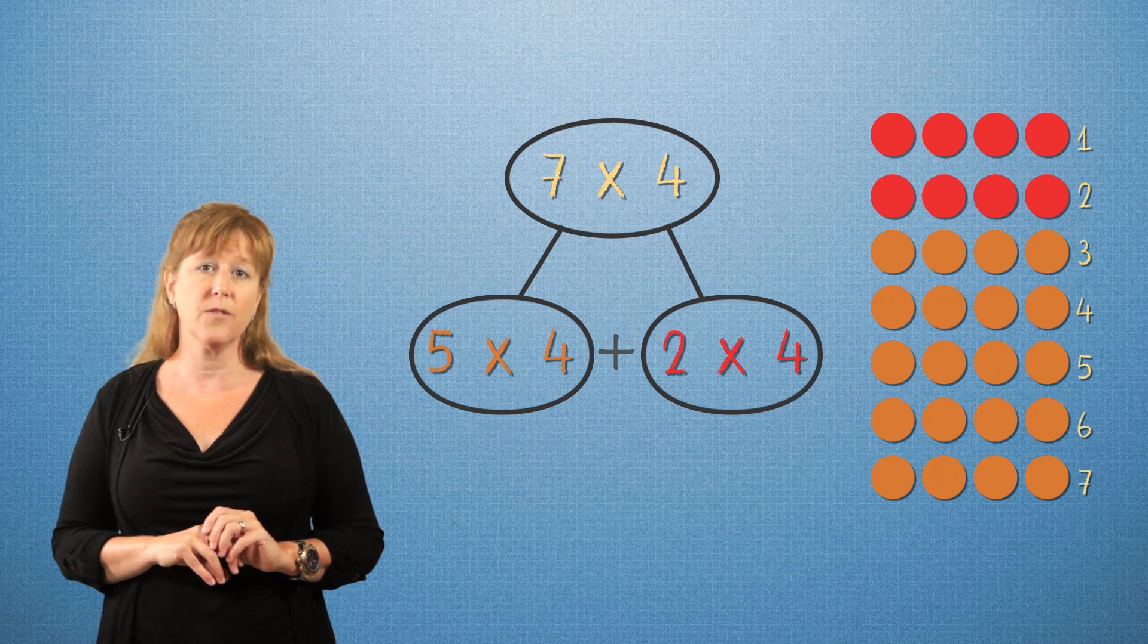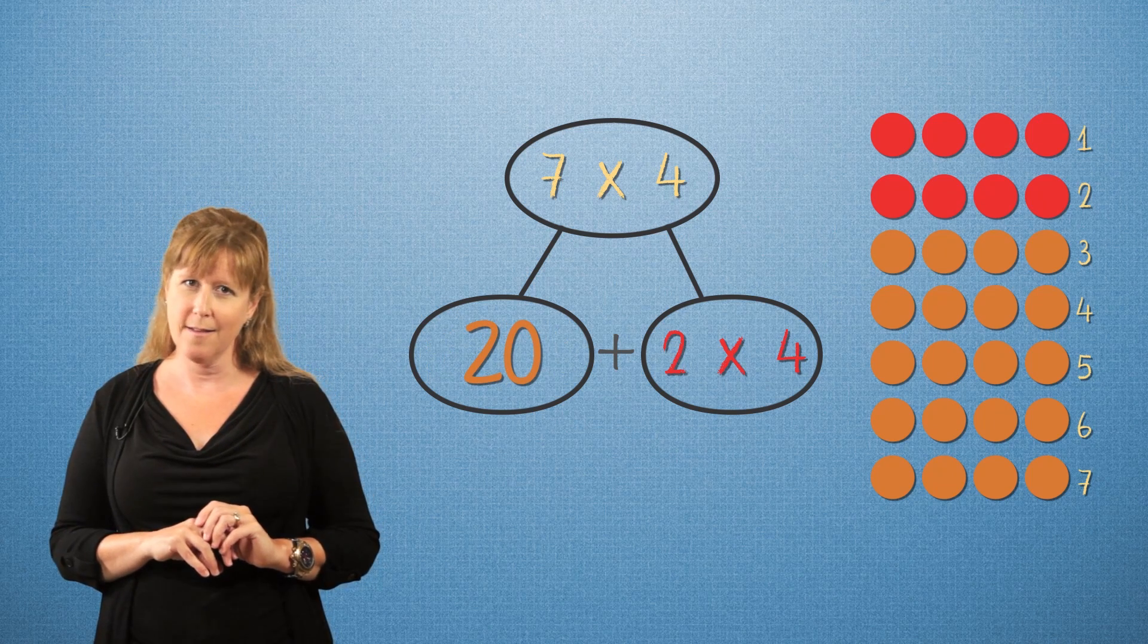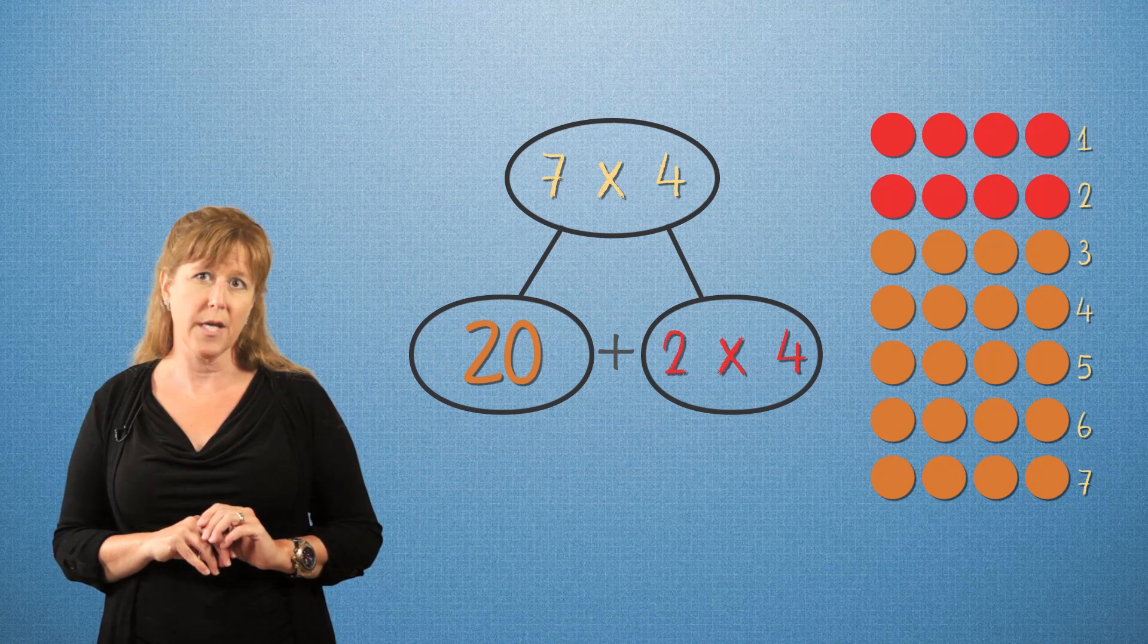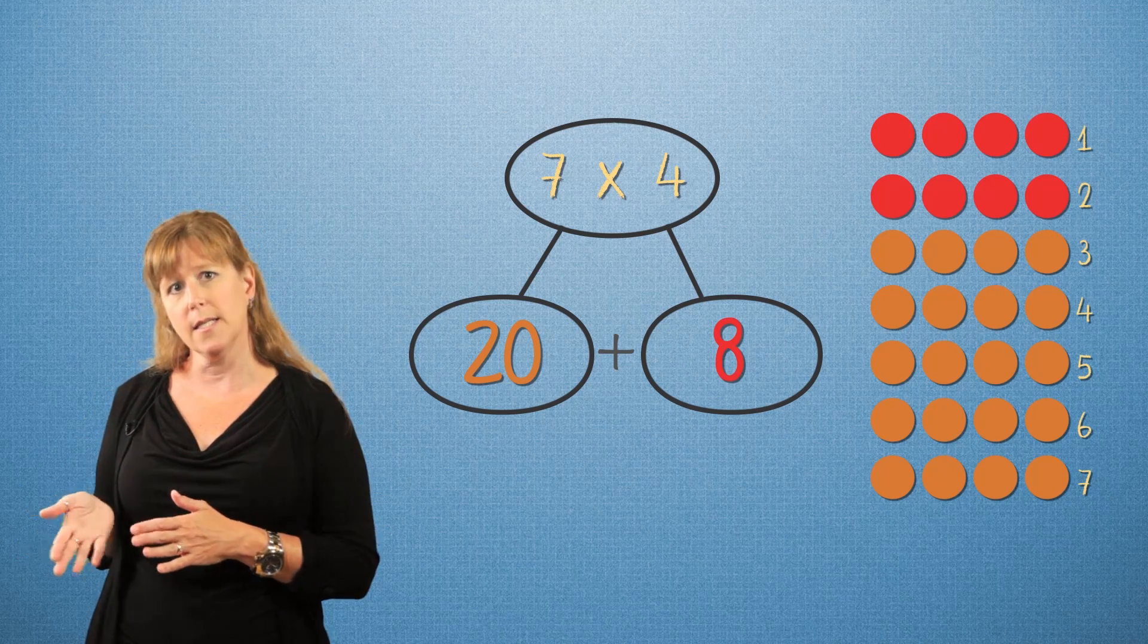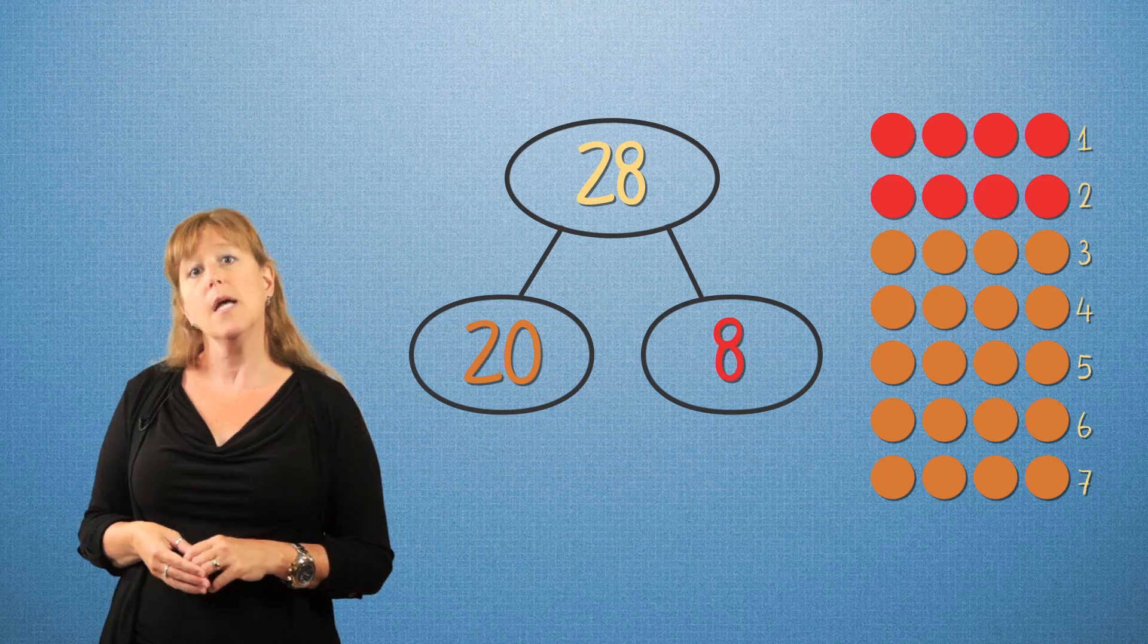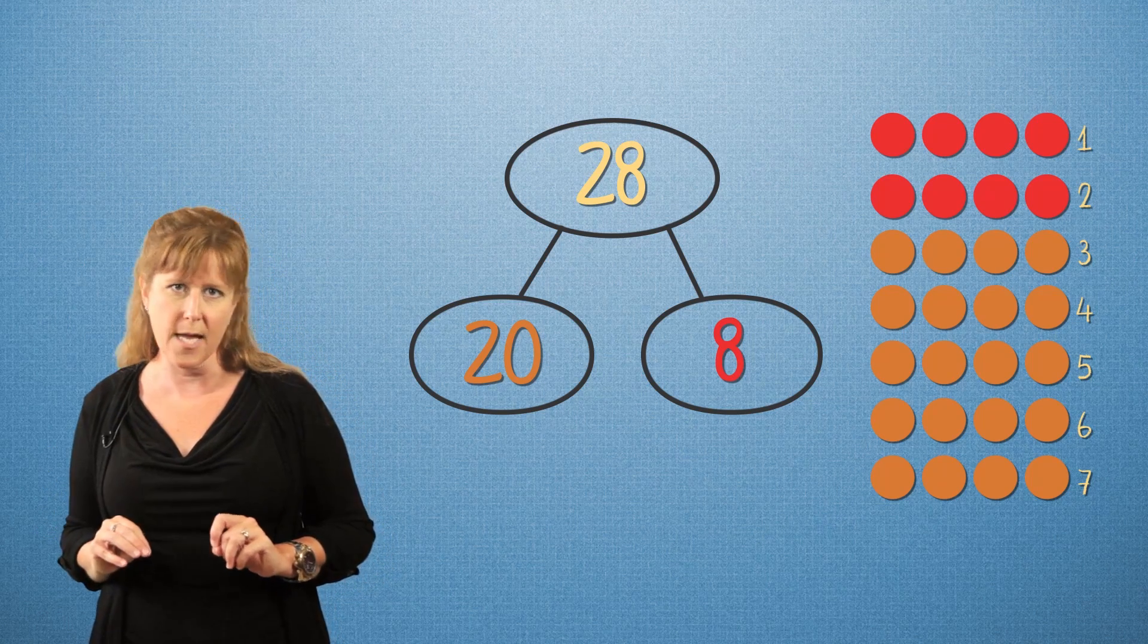Five times four equals twenty. And two times four equals eight. Then twenty plus eight equals twenty-eight. So seven times four equals twenty-eight. Fabulous. There are twenty-eight people in total in the theater.